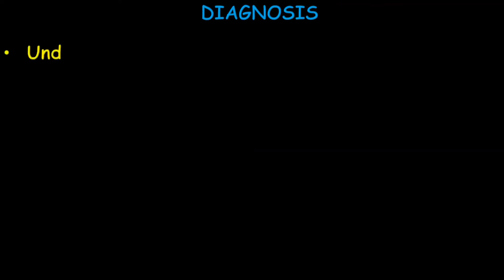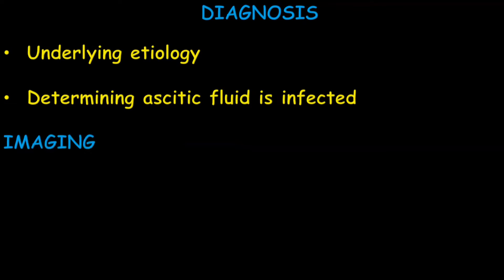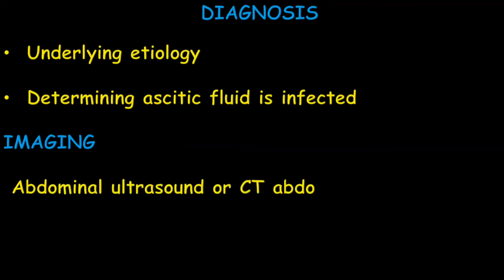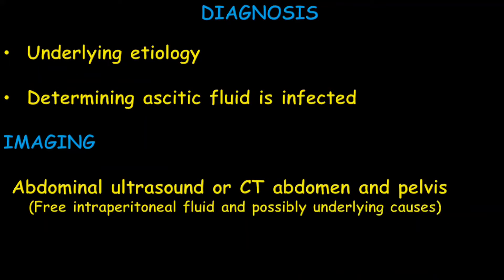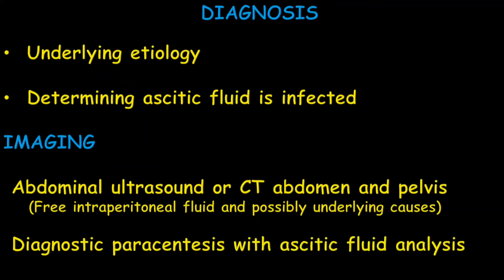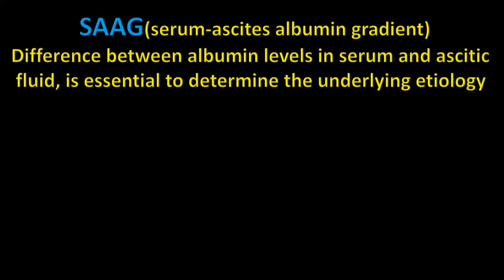Diagnosis is based on the underlying etiology and determining whether the ascitic fluid is infected or not. Imaging includes abdominal ultrasound and CT abdomen and pelvis, used to identify free intraperitoneal fluid and possibly the underlying causes. We can also do diagnostic paracentesis with ascitic fluid analysis, and we can check SAAG — the serum ascites albumin gradient — where the difference between albumin level in serum and ascitic fluid is essential to determine the underlying etiology.